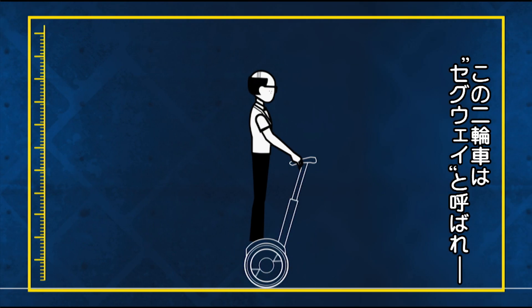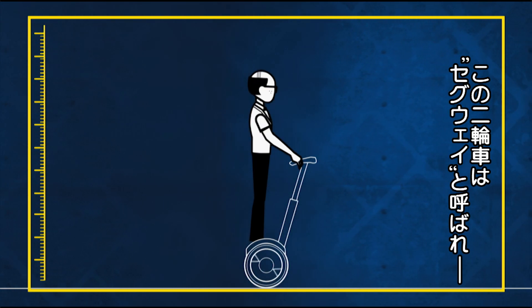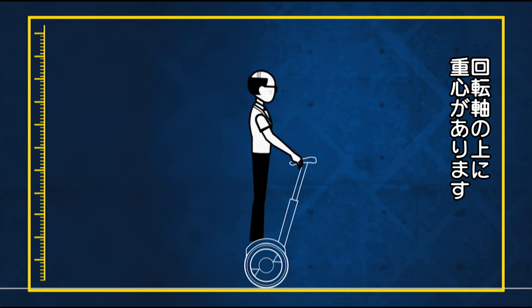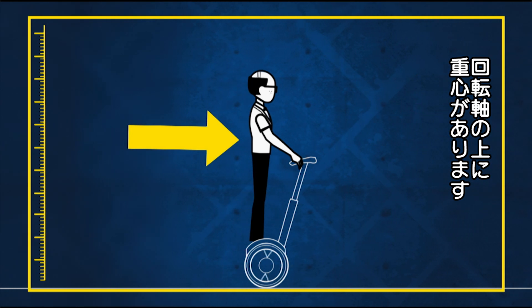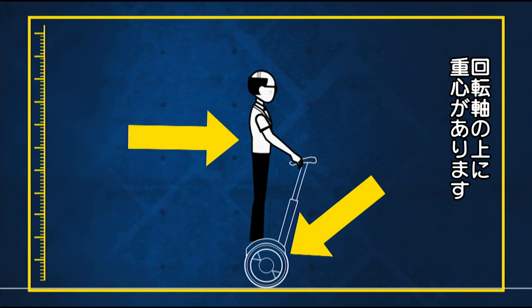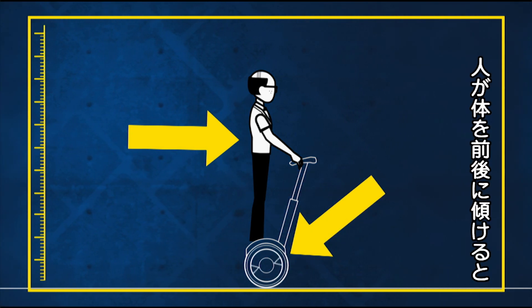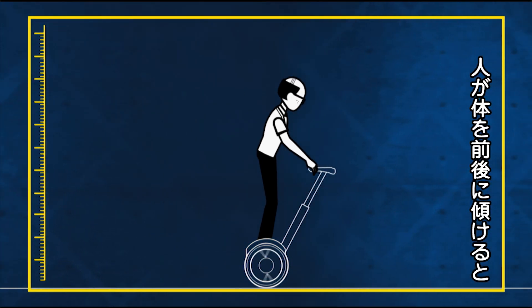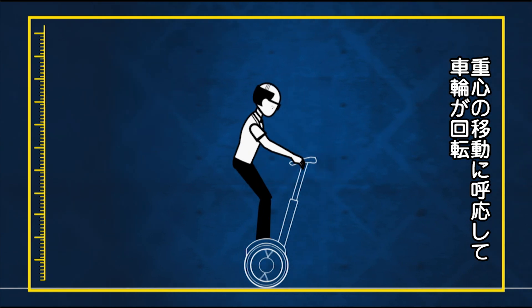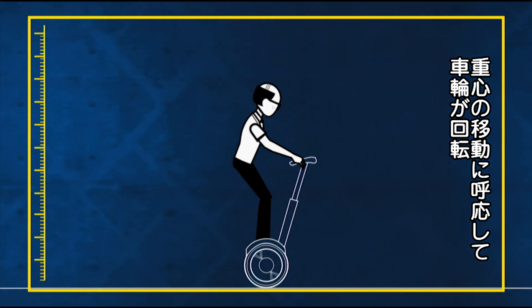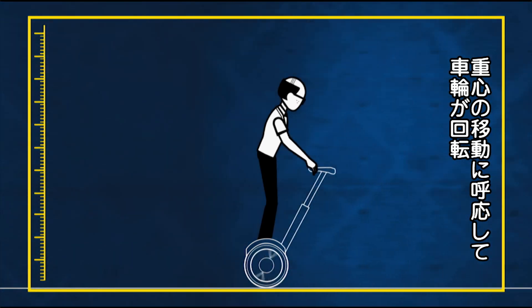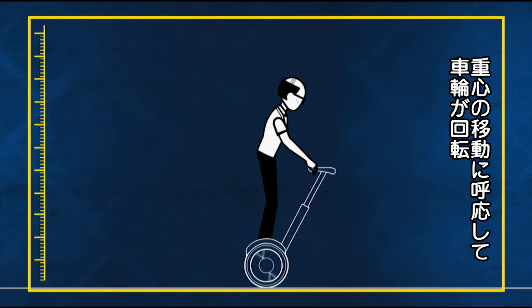A Segway is an inverted pendulum, which means that its centre of mass is above its pivot point. If the rider leans forwards or backwards, the wheels will move accordingly in order to catch up with the rider's centre of mass.